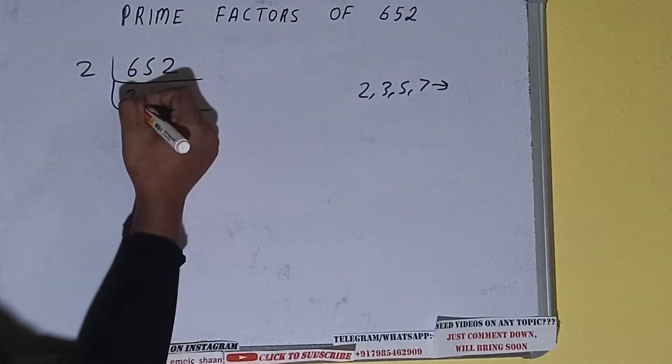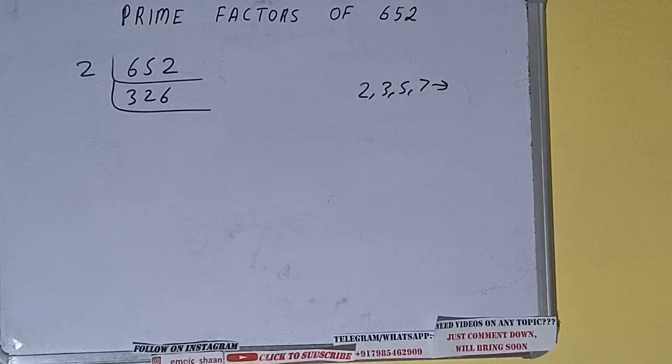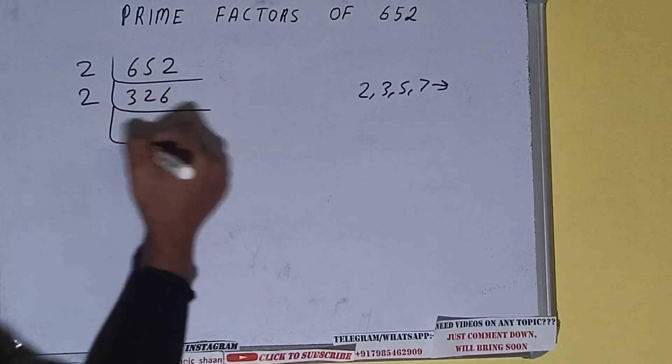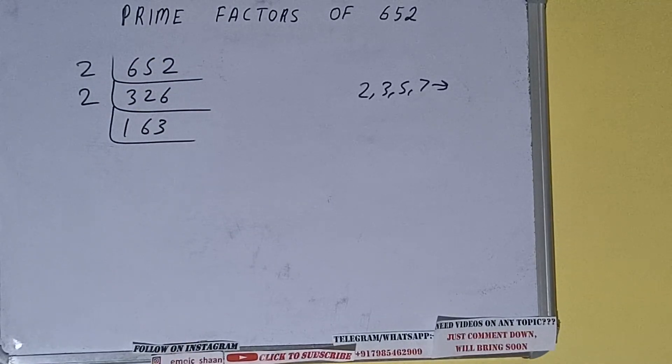326 is further even, so it is divisible by 2. So divide it and we'll be having 163. Now 163 is not divisible by 2 because it is an odd number.